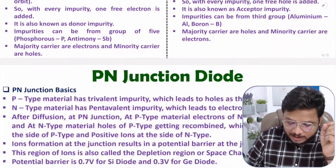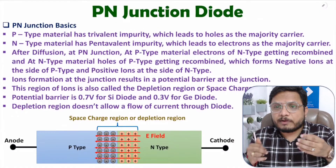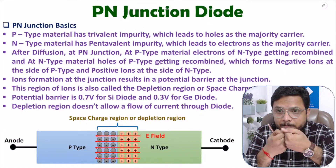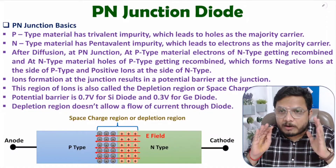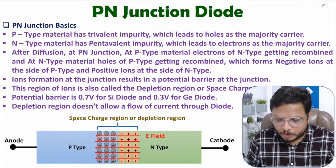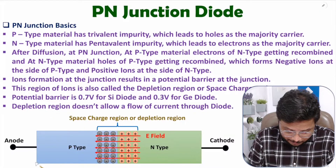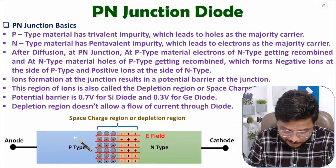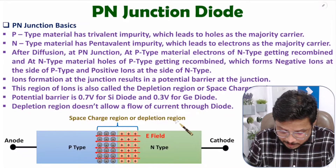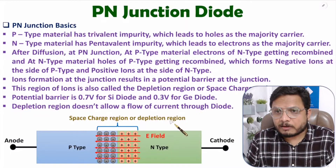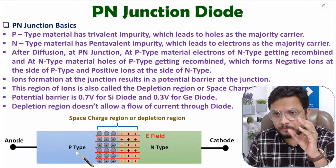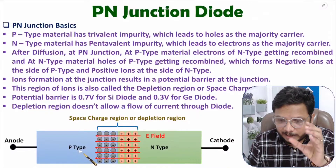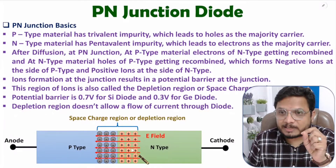In a PN junction, what we do is diffuse P-type and N-type material together. When you form a junction, there is a formation of a depletion region. Here we have P-type material and N-type material being diffused together, so at this junction there is a formation of a depletion region. At the junction, P-type material has holes as a majority carrier and N-type material has electrons as a majority carrier.